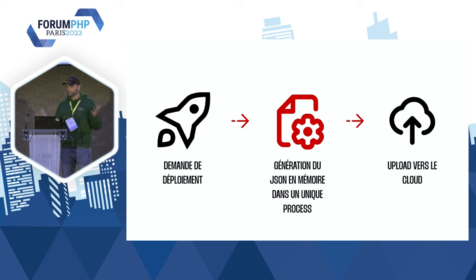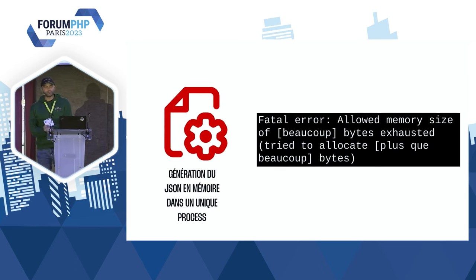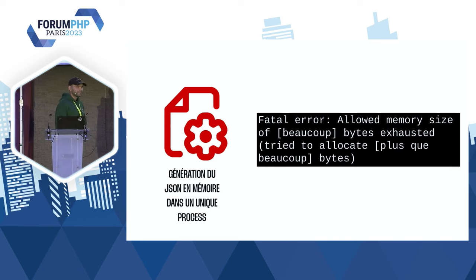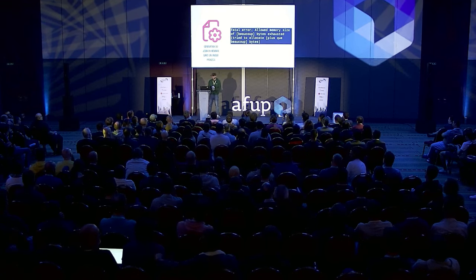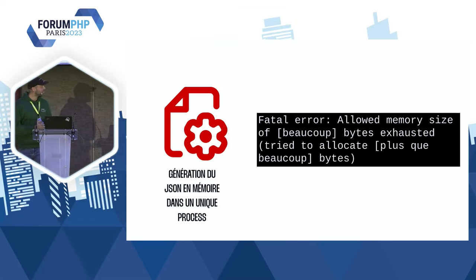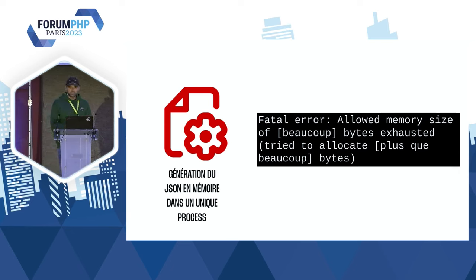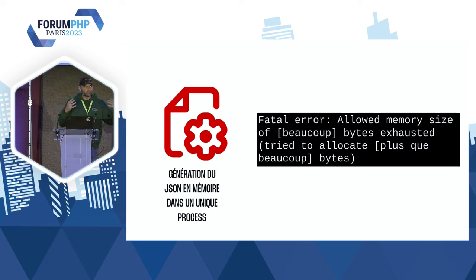Ce truc a fonctionné pendant des années, et puis un jour on a eu un petit problème que vous connaissez peut-être — une erreur de memory size. Personne ici n'a jamais vu ça ? Aucune main levée, très bien. On ne pouvait plus du tout déployer nos gros fichiers JSON, c'était terminé, c'est trop gros, on ne pouvait plus rien faire.